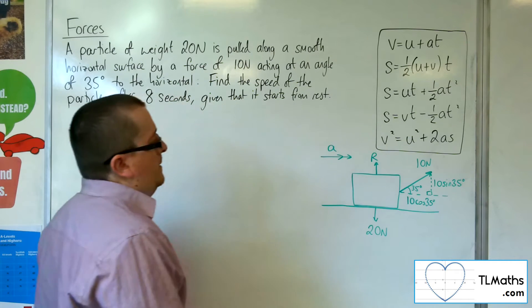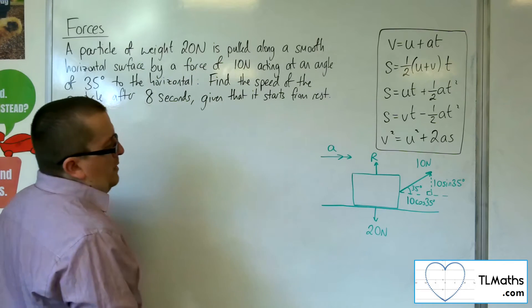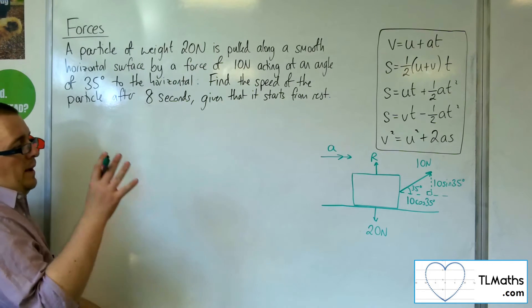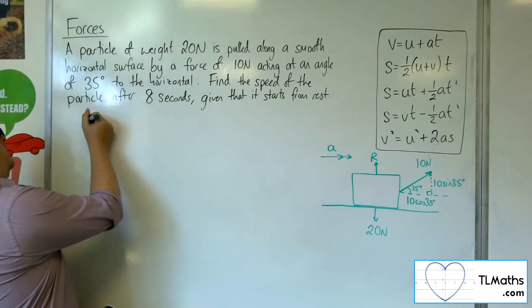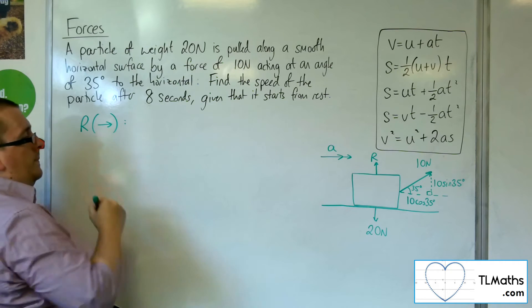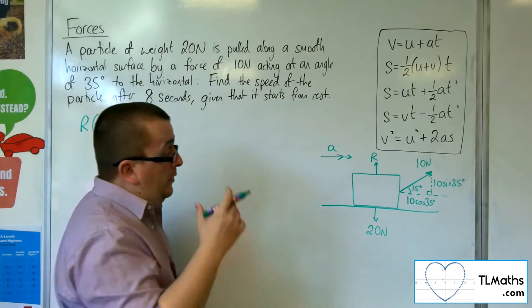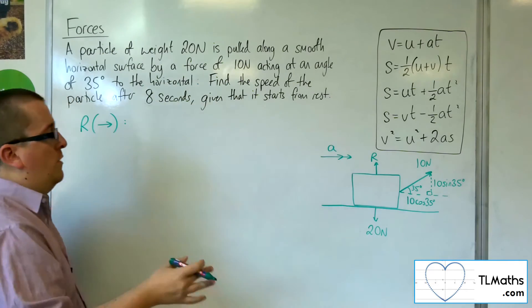Now, what I'd probably want to do next is to think about resolving this horizontally. I'm going to take to the right as positive. Now, I'm looking for the net force, so I've got that 10 cosine 35 working in that direction.